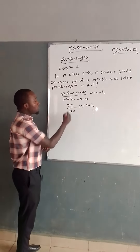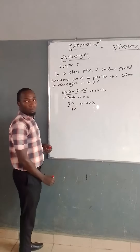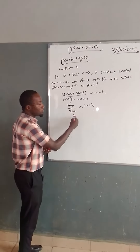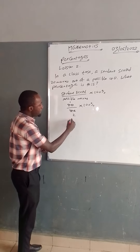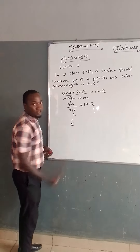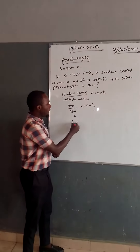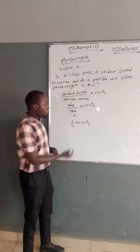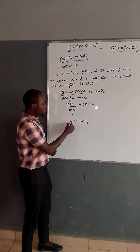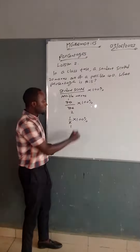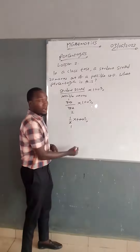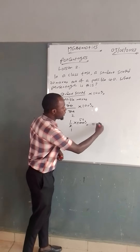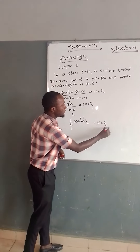Now, 20 over 40 simplifies: 20 over 20 is 1, and 20 over 40 is 2, leaving us with 1 over 2. So 1 over 2 times 100 percent. From here, we simplify to get 50. That means the result is 50 percent.